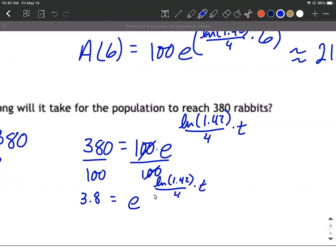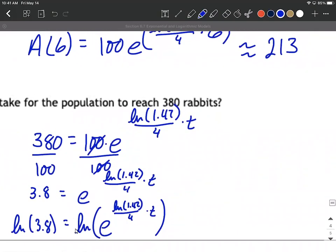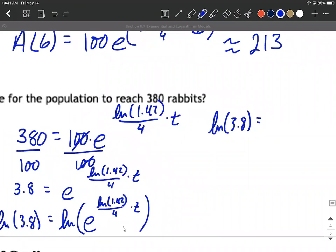Pretty similarly to part a, when we have e to a power we want to utilize a natural log on both sides. So natural log of 3.8 is going to be the natural log of e to this power. And by choosing the natural log you get that nice canceling out on the right hand side. The inverse function property allows us to do some canceling and that's going to leave us with the exponent, natural log of 1.42 divided by 4 times t.